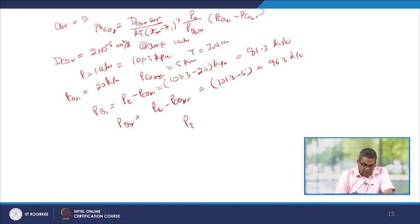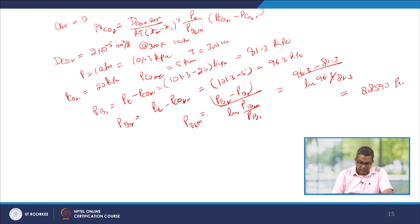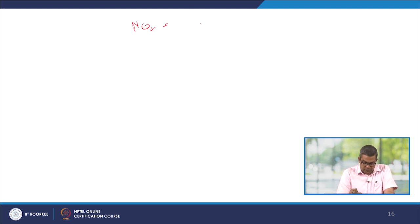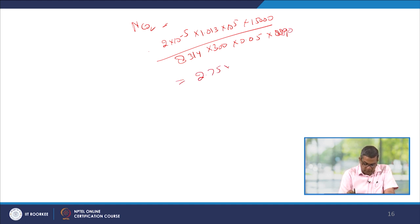pBLM equals (pB2 − pB1)/ln(pB2/pB1) = (96.3 − 81.3)/ln(96.3/81.3) = 88,590 Pa. Substituting all values: NCO2 = (2×10⁻⁵ × 1.013×10⁵ × 15,000)/(8314 × 300 × 88,590 × 0.05), which comes out to be 2.75×10⁻⁶ kmol/(m²·s). This is our answer.